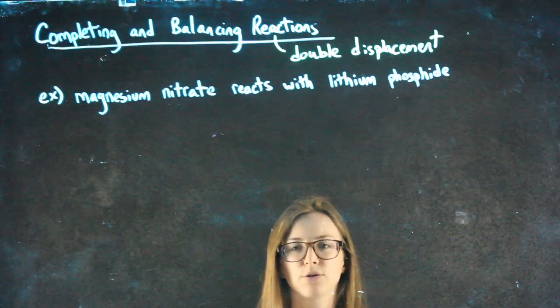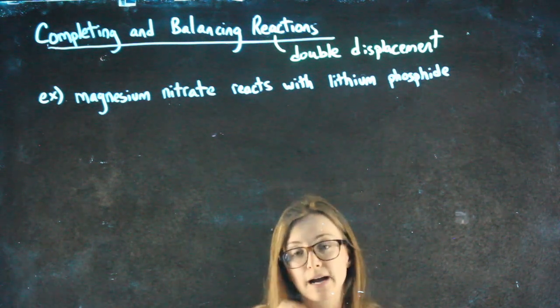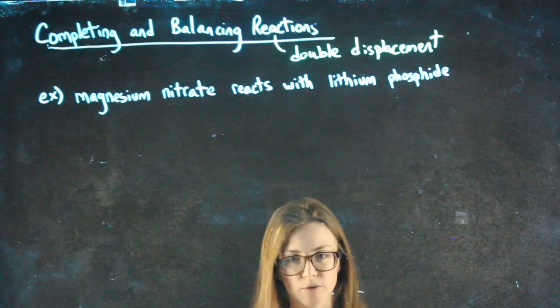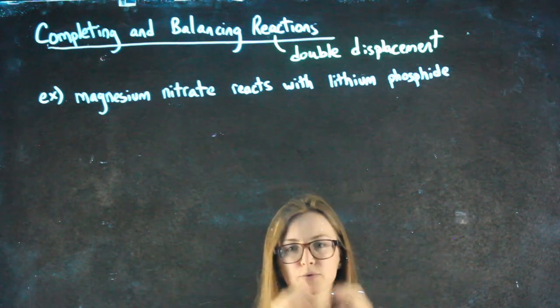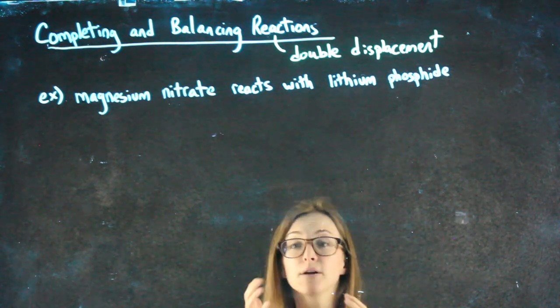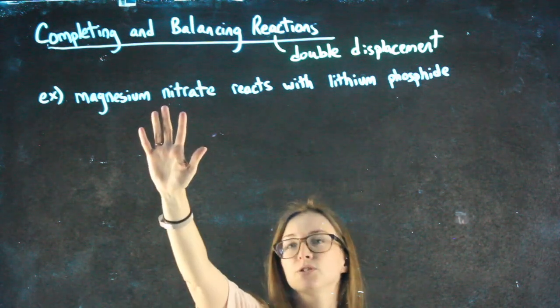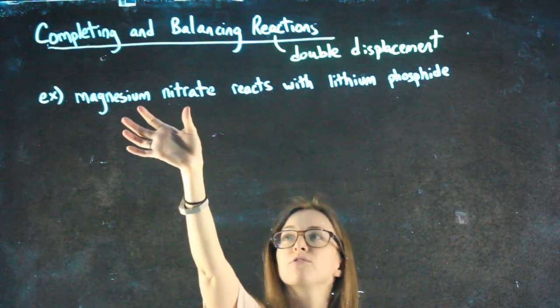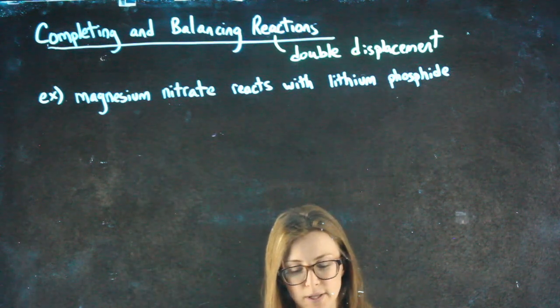We're going to take a look at how to complete and balance, or basically how to write out a chemical reaction - two different compounds reacting with each other. In order to do this, you have to be able to do what we've already learned: go from the name of a compound into its chemical formula.